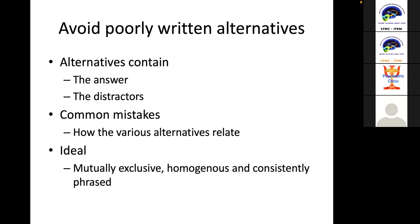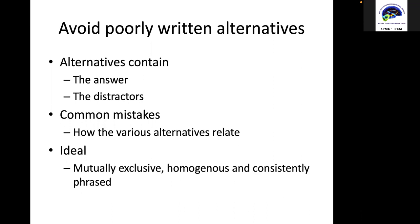To further clarify: you cannot include 'euphoric mood' as an alternative in a question about cognitive symptoms of depression — it is too easy to rule out because it is clearly off. Similarly, you cannot include 'grandiose delusion,' which is too obviously unrelated to depression. Distractors should seem plausible but be clearly distinguishable on closer analysis. I hope that's clear now.